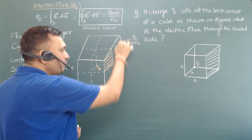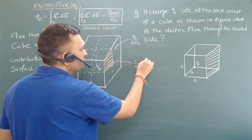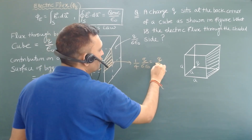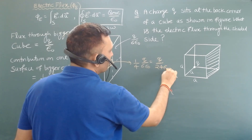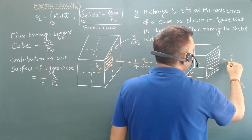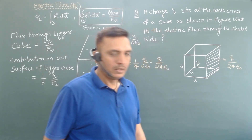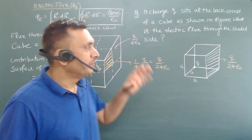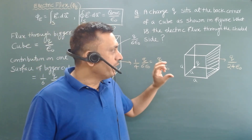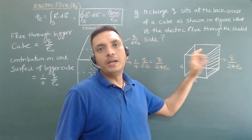The shaded surface is 1/4 of one face of the bigger cube, so the contribution to this surface will be 1/4 times q divided by 6 epsilon naught, which equals q divided by 24 epsilon naught. Therefore, the electric flux through the shaded surface is q by 24 epsilon naught. Using Gauss's Law and symmetry, whenever symmetry is involved we can find the contribution of flux to one particular surface.